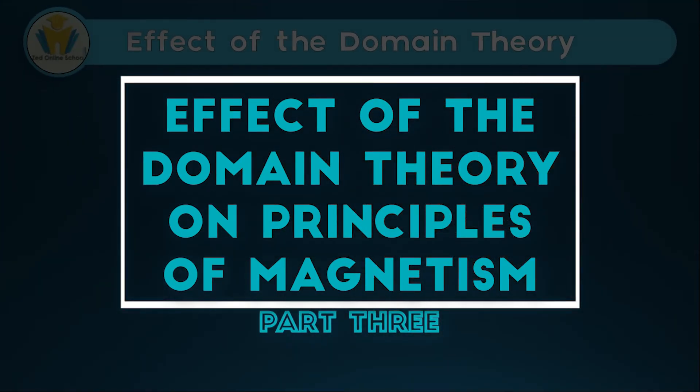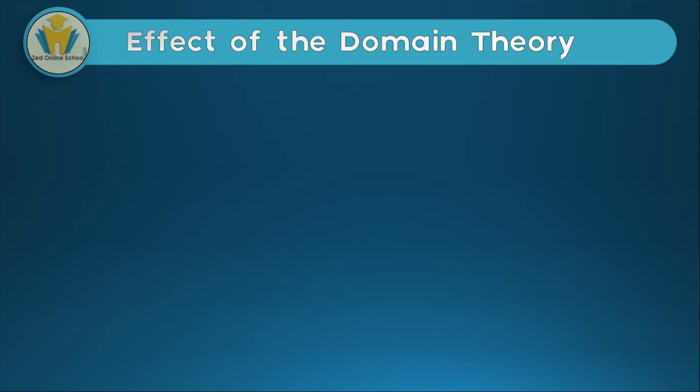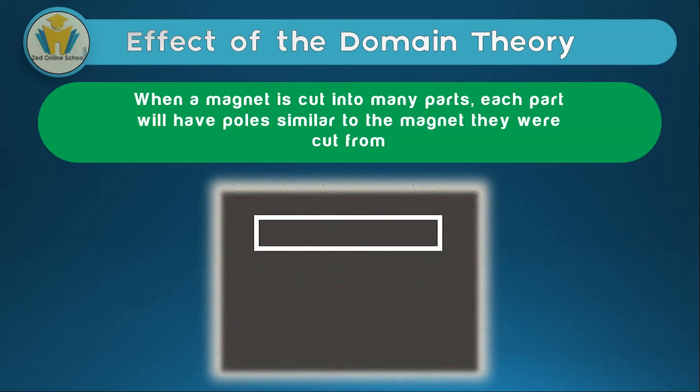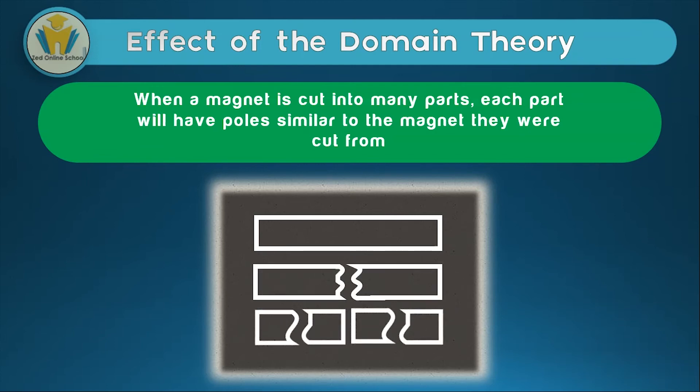What is the effect of the domain theory when thinking about magnetism? The effect is simple. When a magnet is cut into many parts, because we know the domain theory, we can understand why each part will have similar poles to the magnet from which they were cut. If we had a bar magnet which was cut into some parts, each of these parts will have the poles similar to the magnet from which they were cut. If this was a north-south magnet, each of those parts would also be north-south.